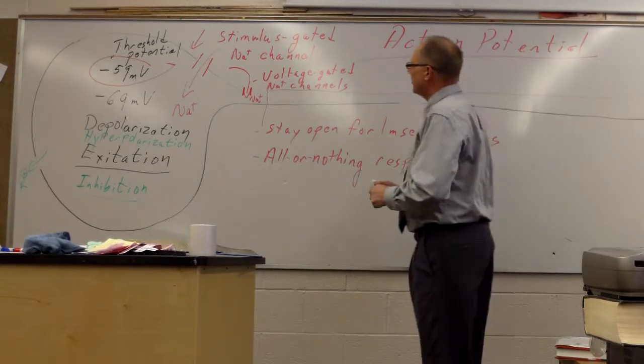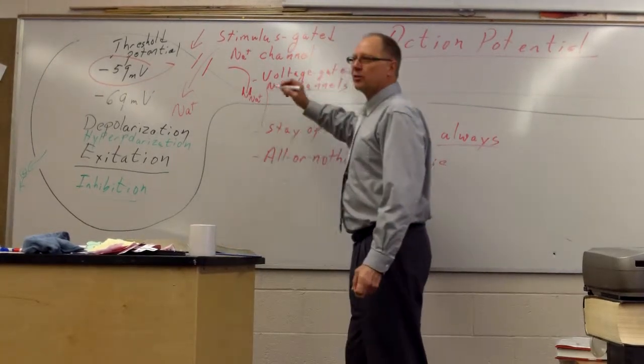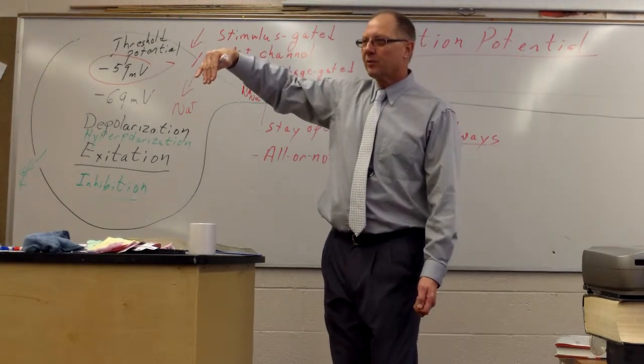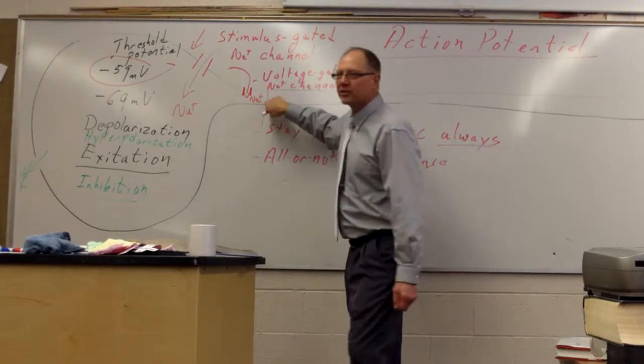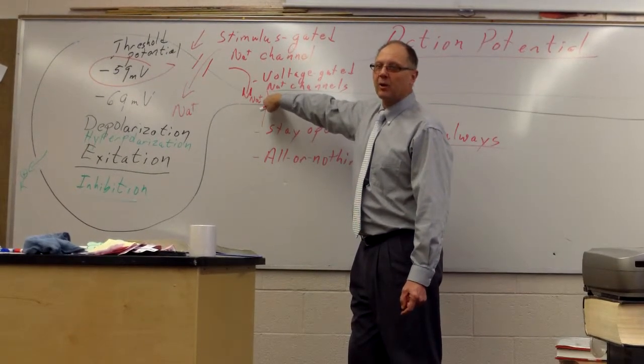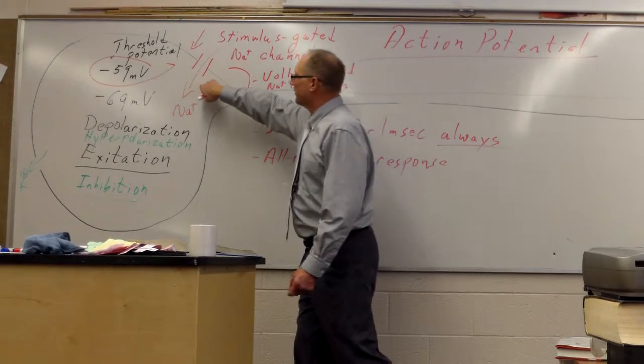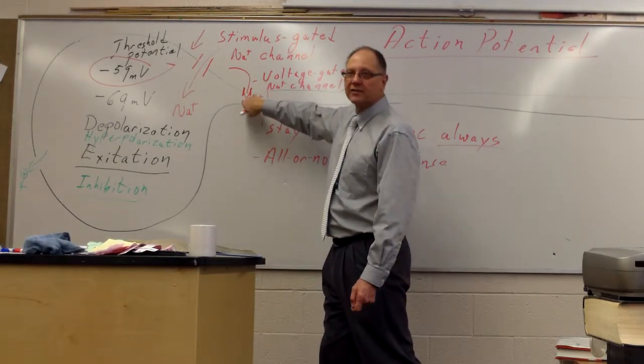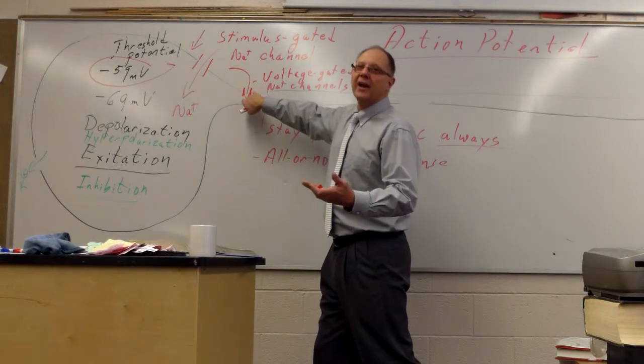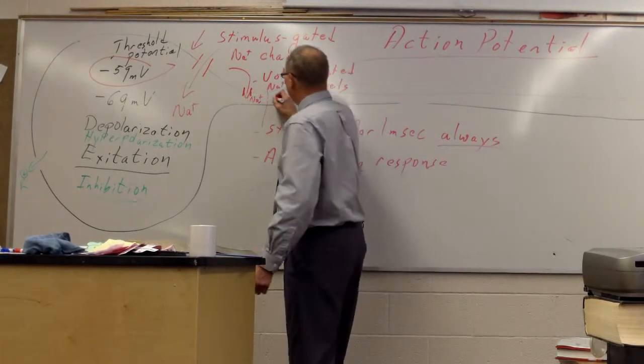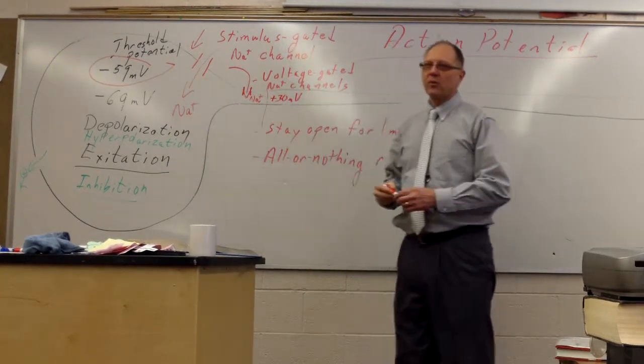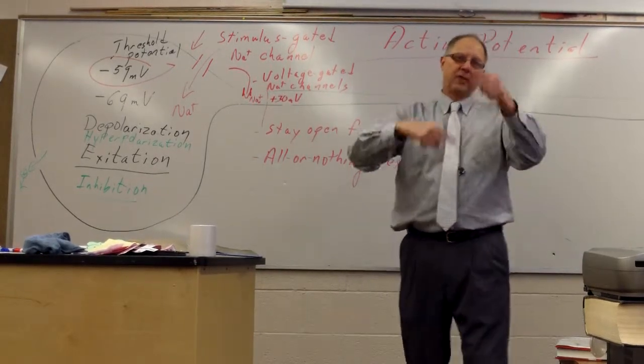So now we've got the voltage gated sodium channels opening. And what that's going to do is that's going to allow so much sodium to come in that we're going to really head towards what number? What millivolts would you guess we would be heading towards here? We're at what? Where are we starting at? Well, we're starting at negative 70 here, right? This was negative 59, which triggered these to open. So we were at negative 70. Which way are we going to head? Towards zero. Towards zero. In fact, we're going to reach zero and we're going to keep going on beyond. We're going to get all the way up to plus 30. So when this gate stays open for one millisecond, so much sodium rushes in that we flip polarity.